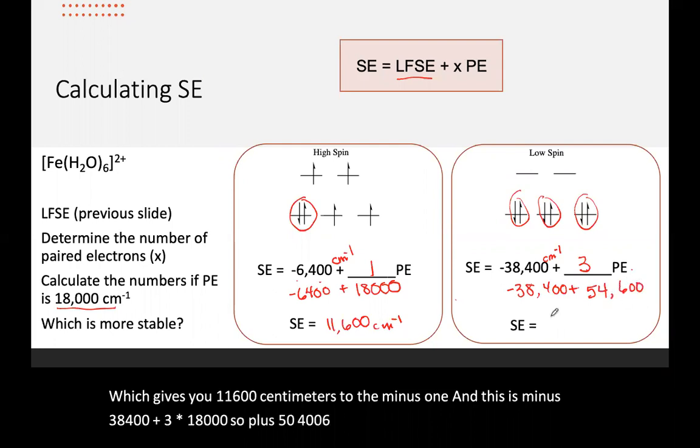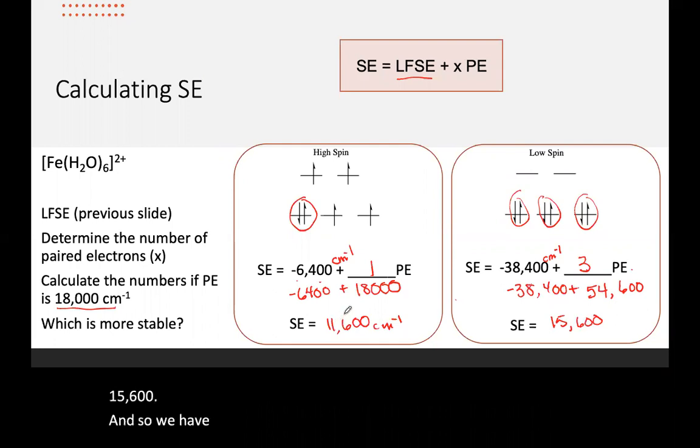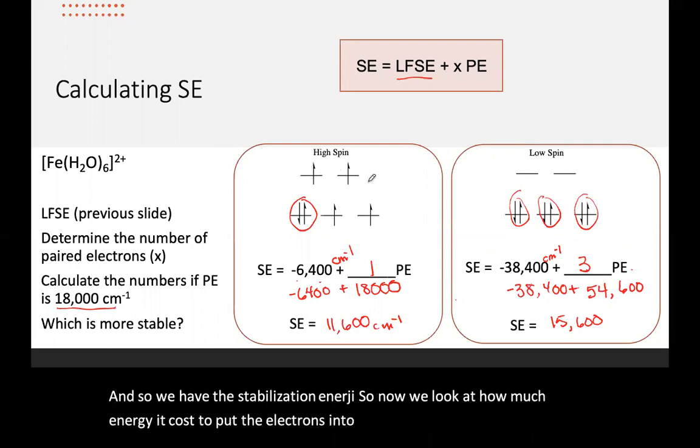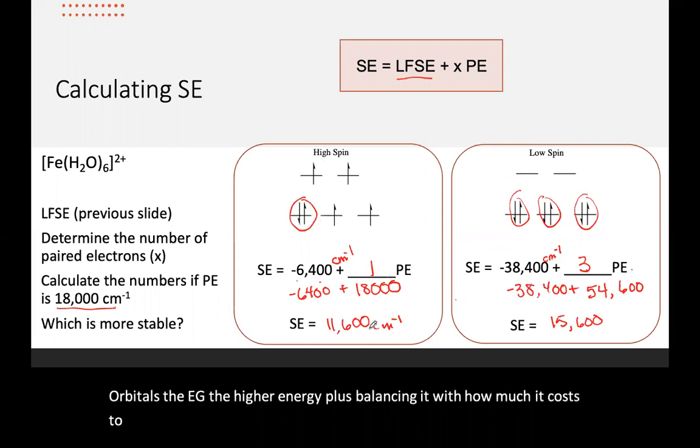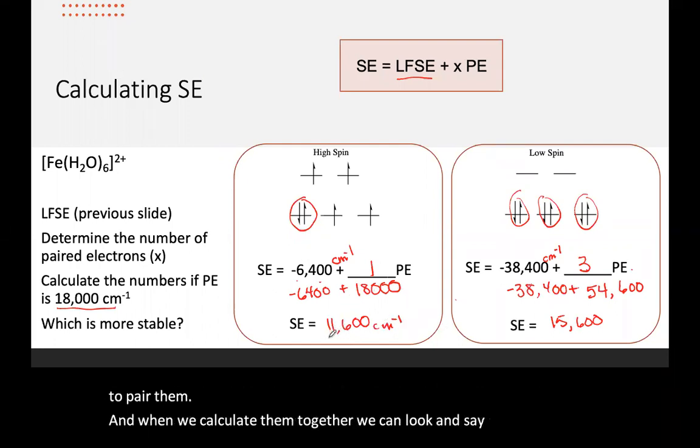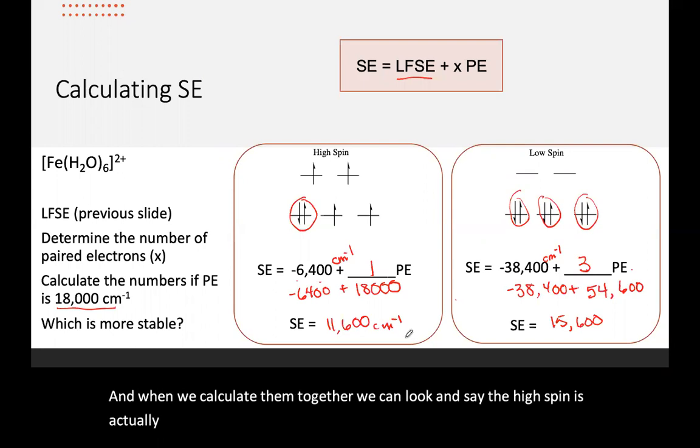We add those together and we get 15,600. And so we have the stabilization energy. So now we look at how much energy it costs to put the electrons into the upper orbitals, the eg, the higher energy, plus balancing it with how much it costs to pair them. And when we calculate them together, we can look and say, the high spin is actually more stable. It's got a smaller energy than low spin. So we would predict that this iron complex is high spin.